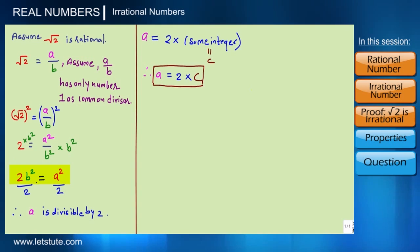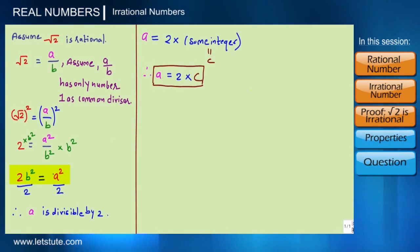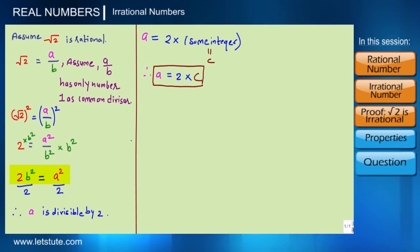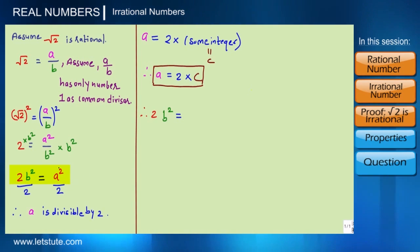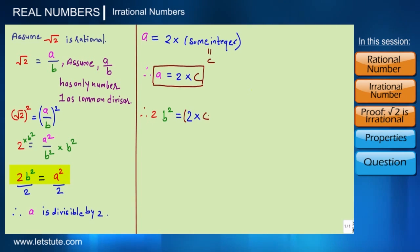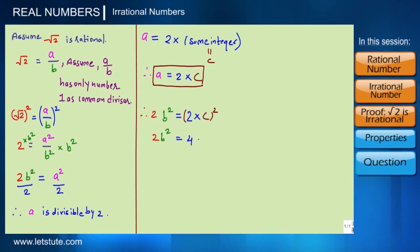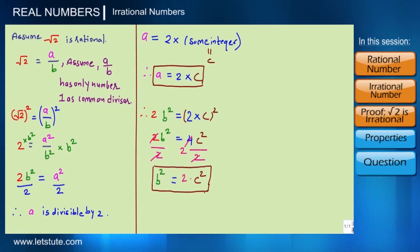We already have 2b² = a². Let's substitute a = 2c: 2b² = (2c)² = 4c². Dividing both sides by 2, we get b² = 2c².